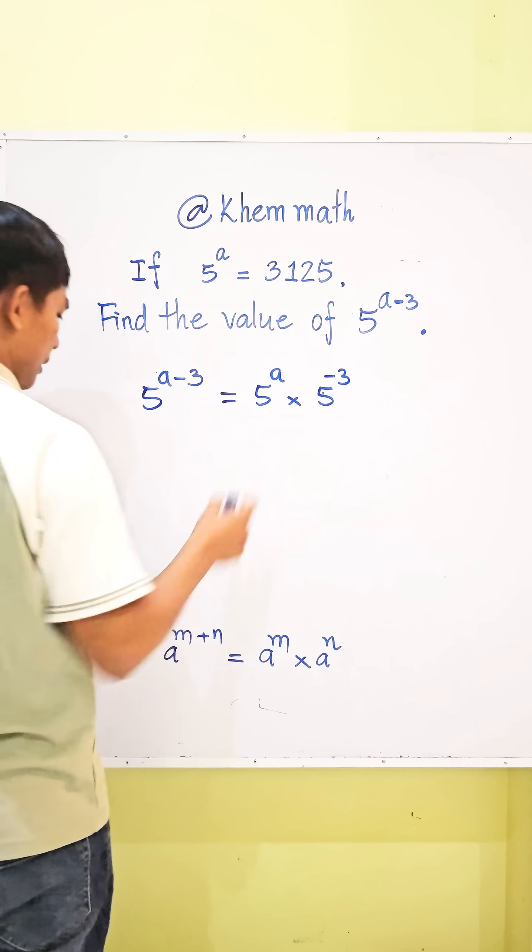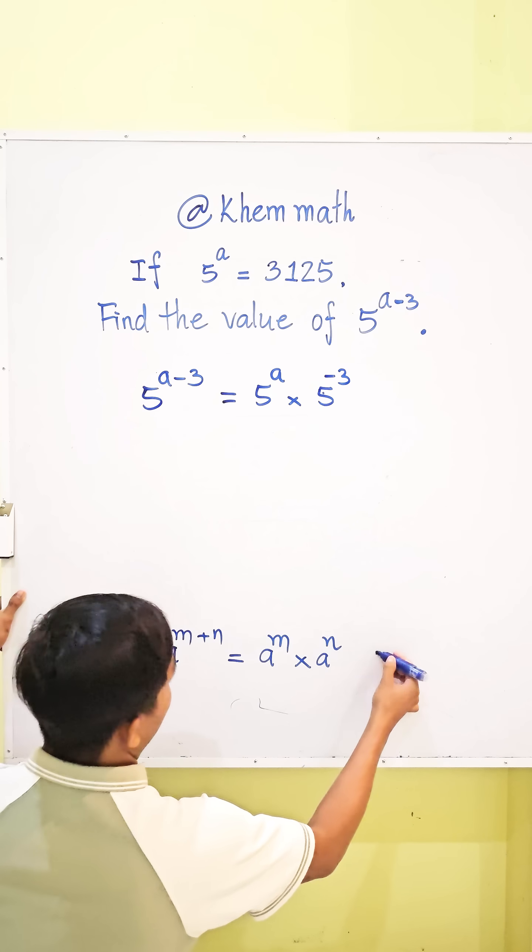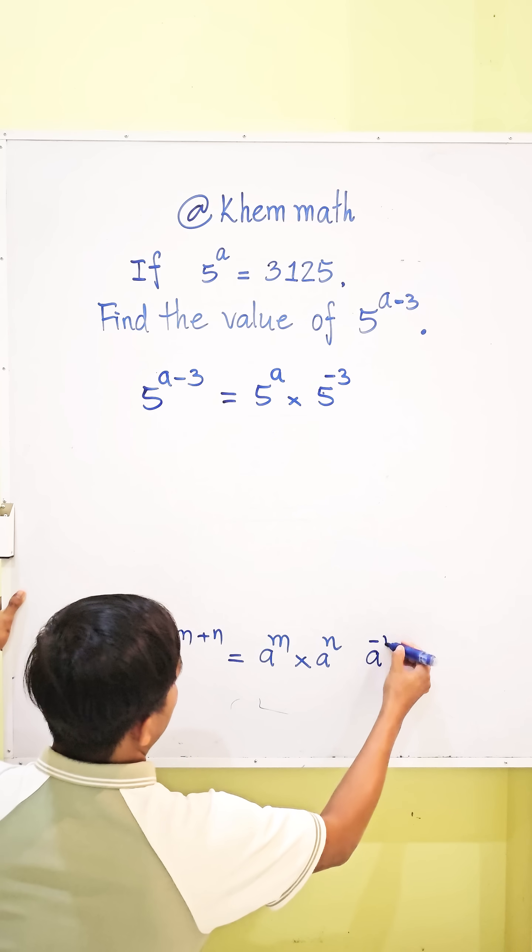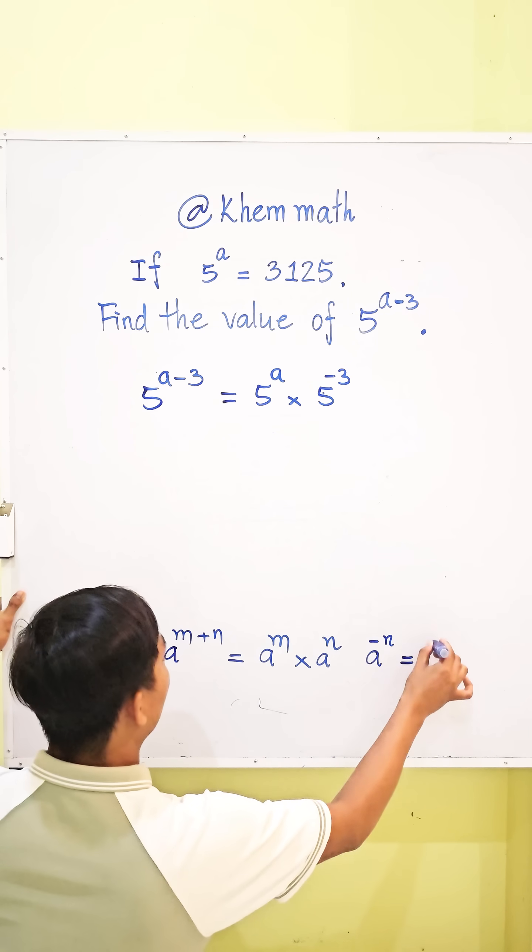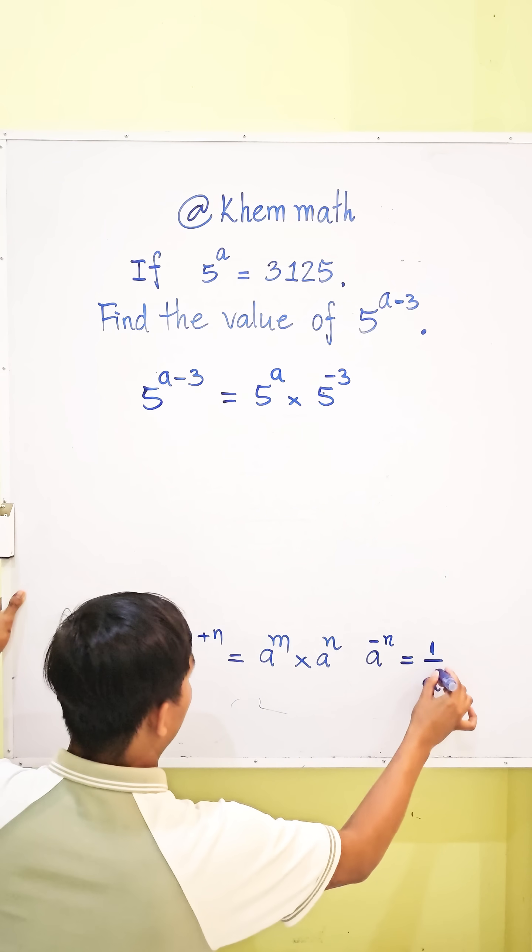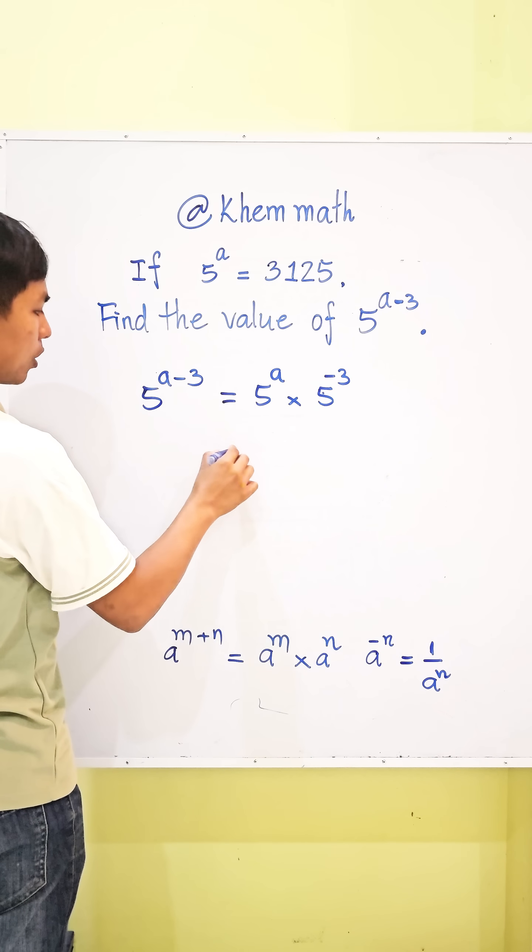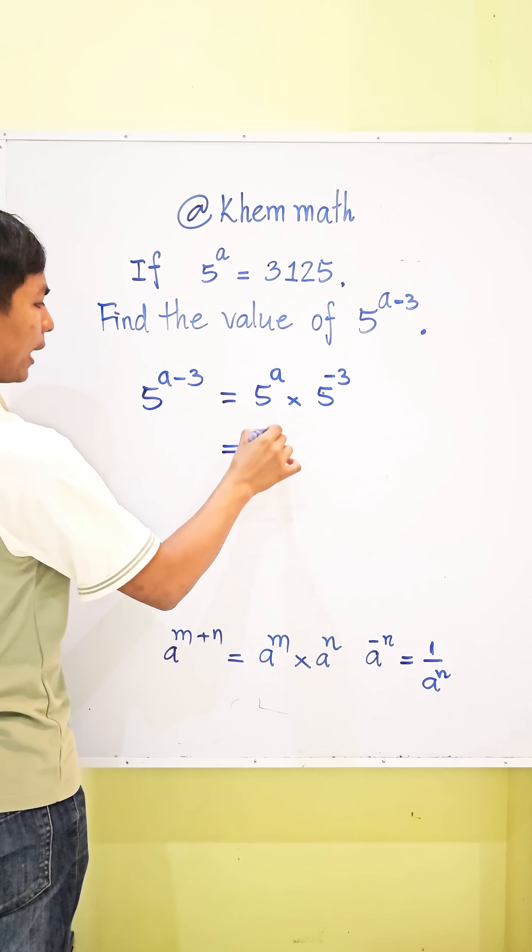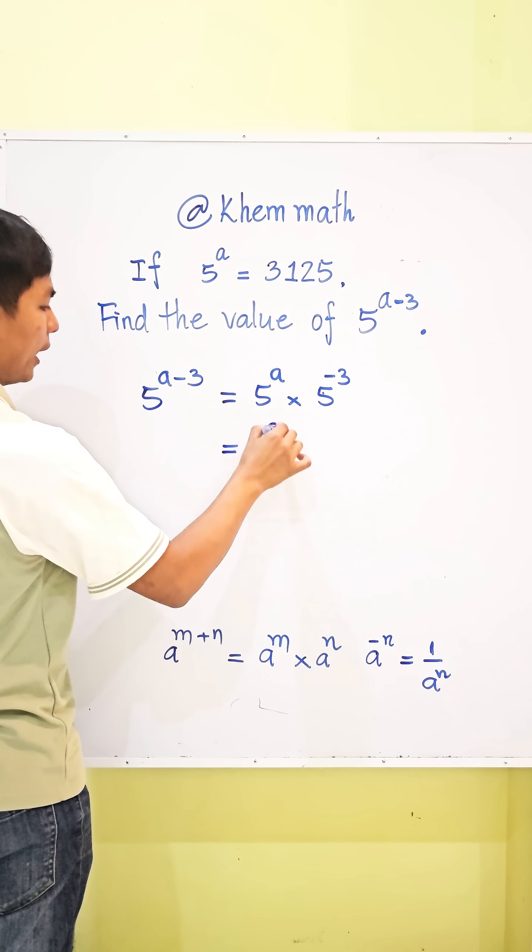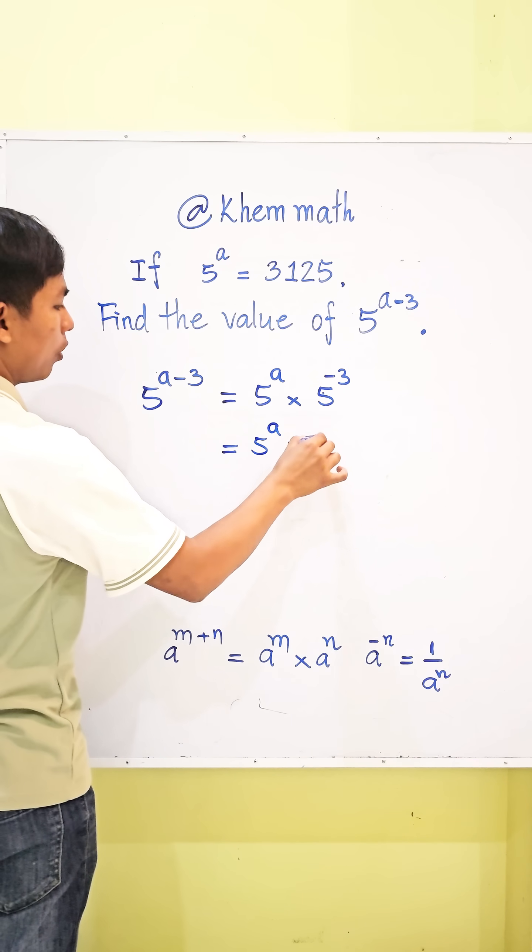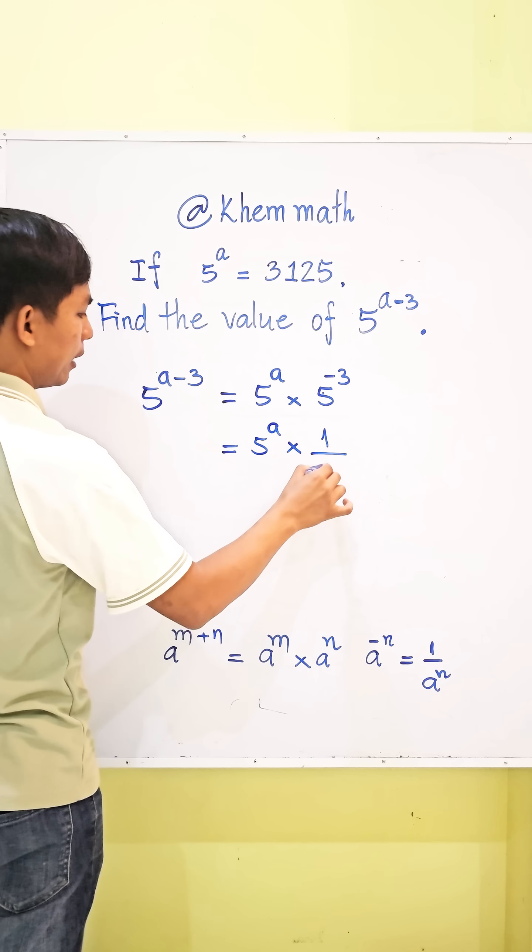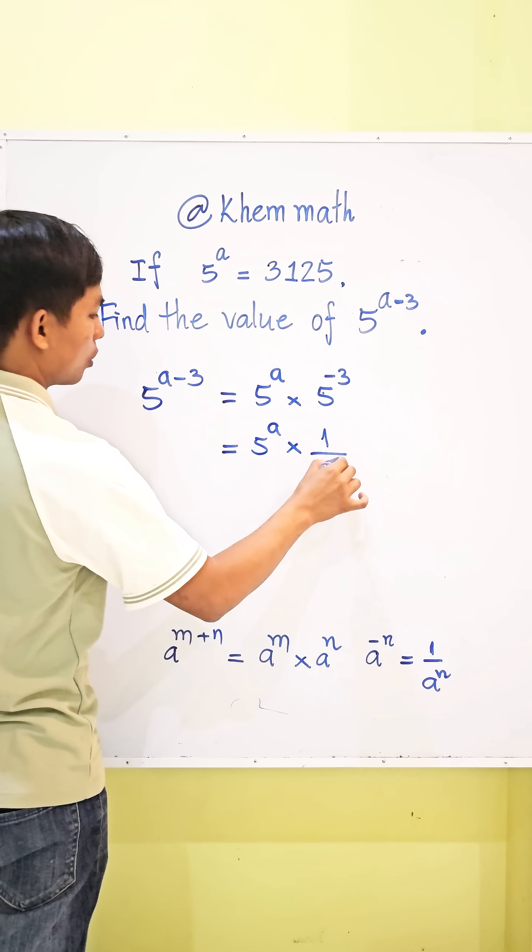And here, we use the formula A power negative N equal 1 divided by A power N. So, we get this equal 5 power A times 1 divided by 5 cube.